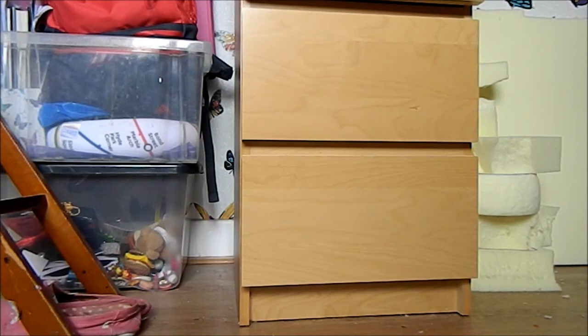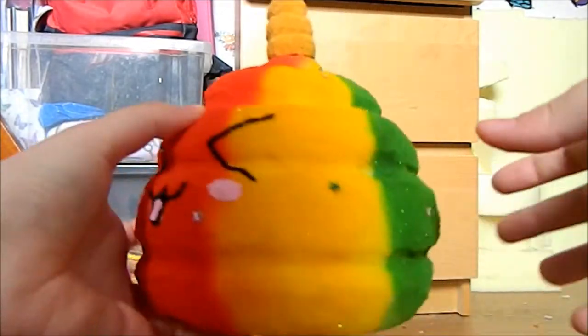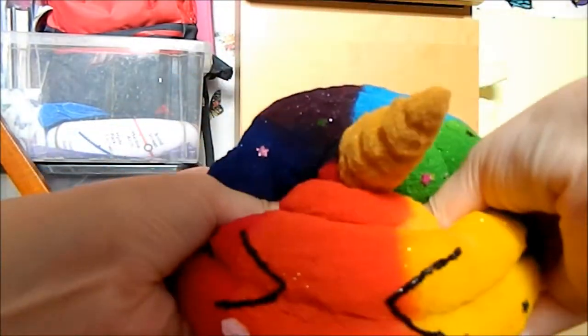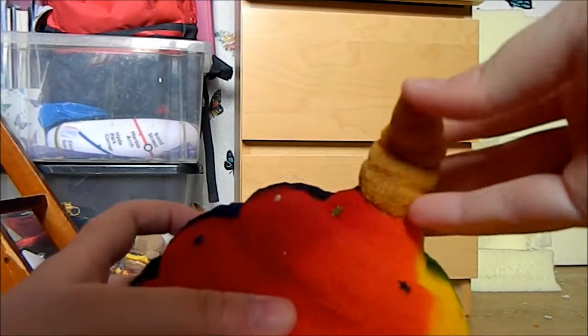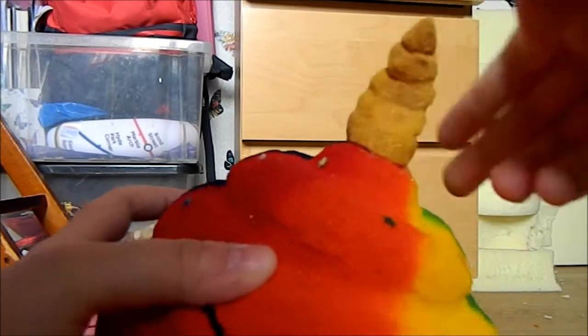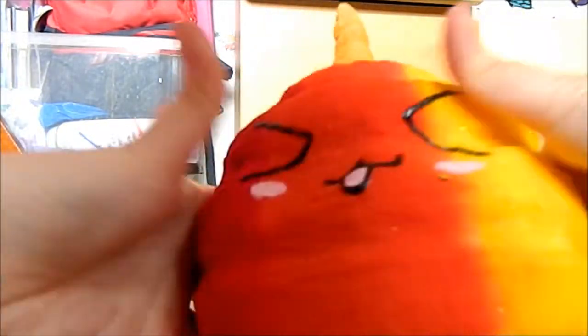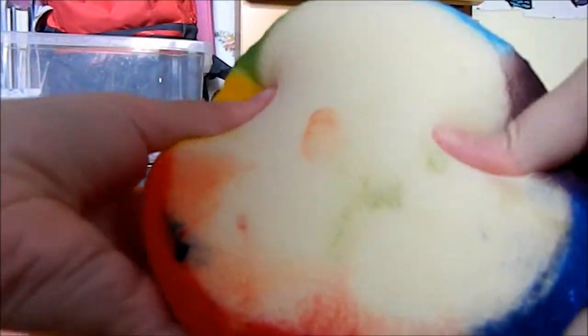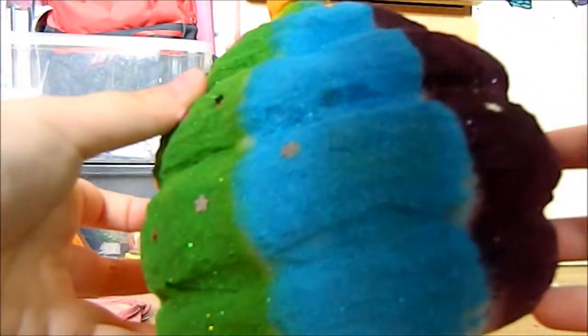The last squishy I have is really random—it's this unicorn poop squishy. It's rainbow as you can see, and it has glitter. It has a gold unicorn horn which is really squishy, and it has a cute little face. I didn't really bother painting the underneath. And it has stars.